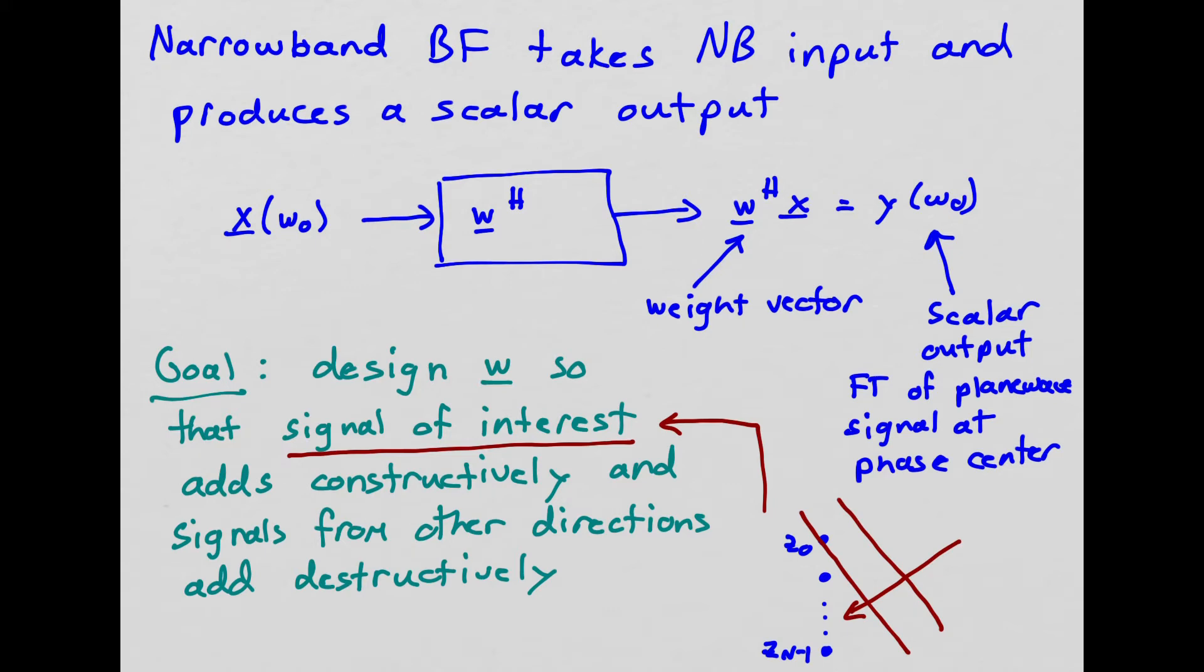So remember our signal of interest is a plane wave. A plane wave coming into our little array here, we've got these plane wave fronts. It hits the way I've sketched it here, it hits Z0 sensor first and Zn-1 sensor last. So what's received across the array is just time-delayed versions of the signal hitting at Z0.